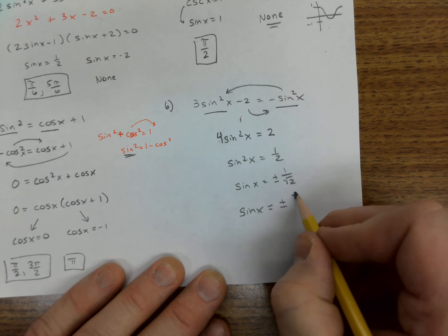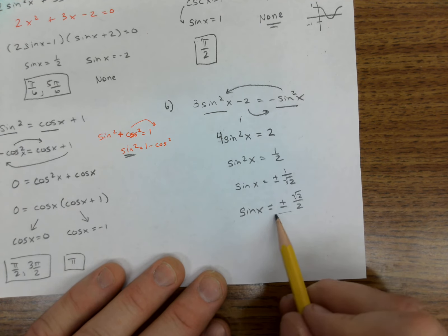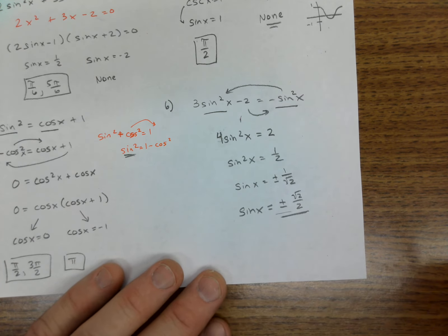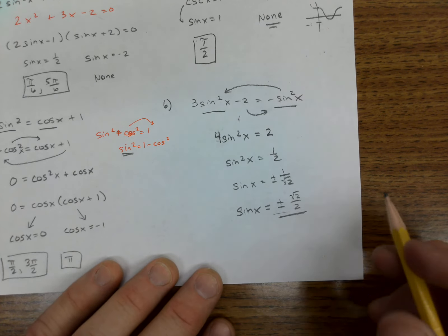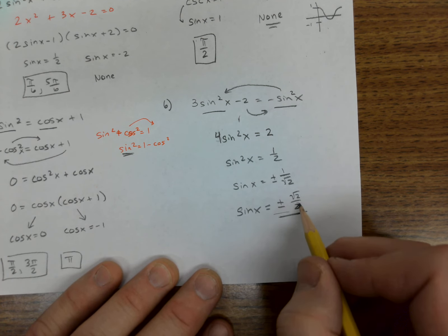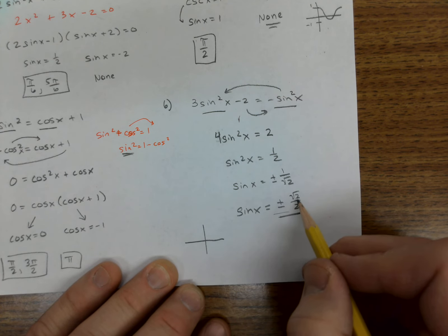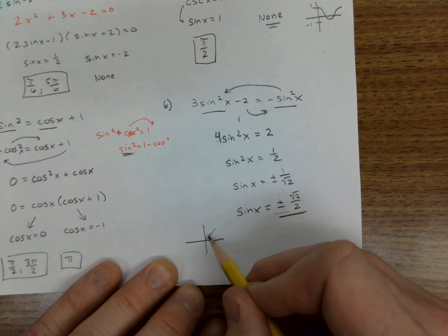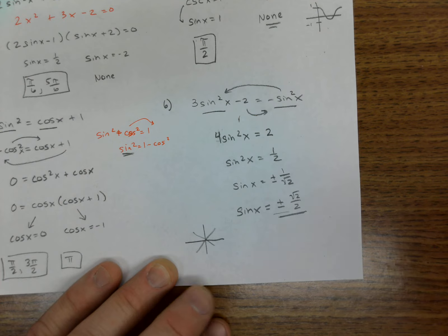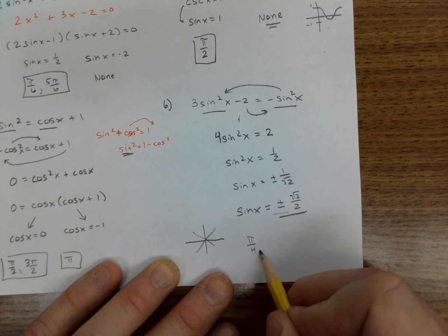Times root 2, I have root 2 over 2. And hey, that's on the unit circle! That's what we're going for. So where is sine plus or minus root 2 over 2? Root 2 over 2 is the one right in the middle, and we want all the positives and negatives.